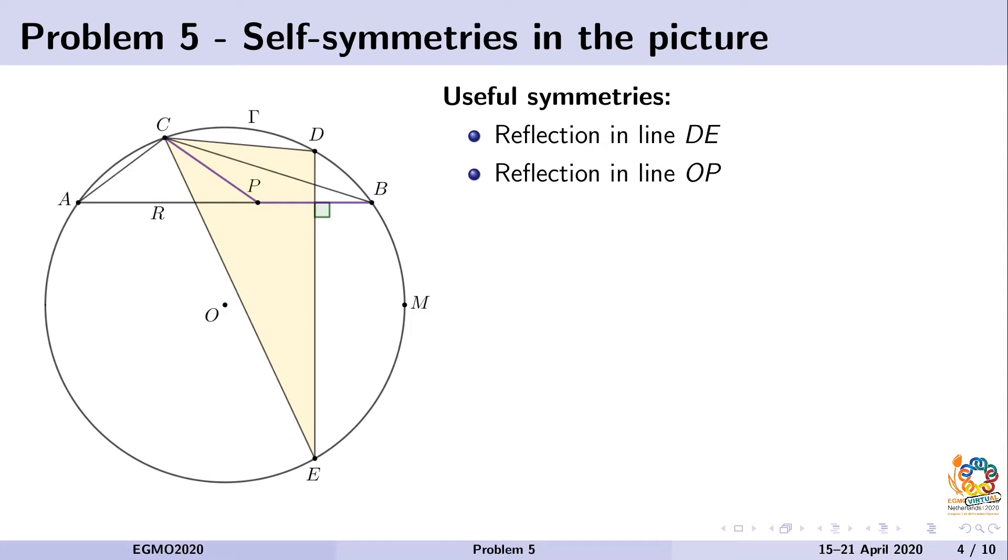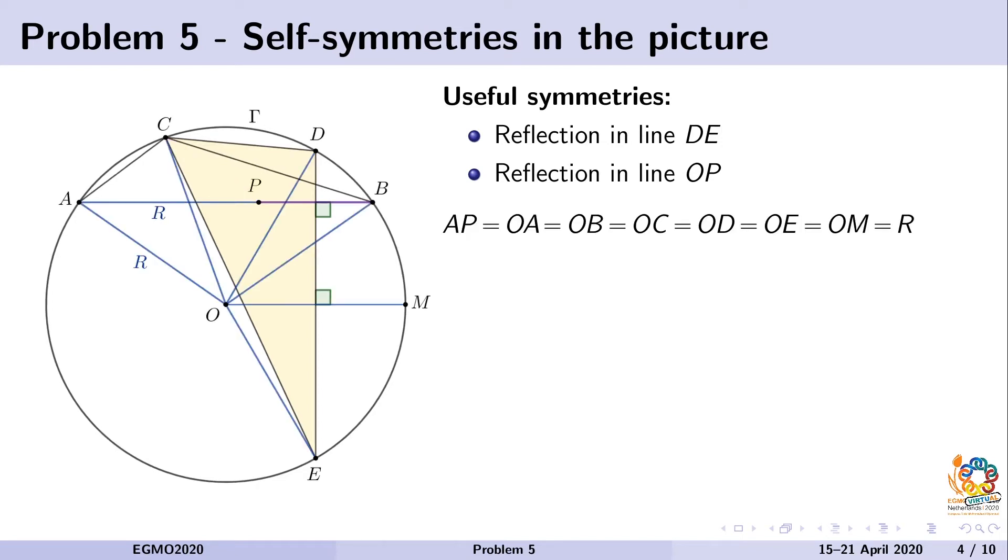To show this, we first look at the many equal segments in this picture. All of them equal R. As AP equals R and equals OM, both of them are parallel because they are perpendicular to DE by construction. We see that APMO is a parallelogram. Moreover, as AO also equals R, this will be a rhombus, which gives us one more equal segment PM, which also equals R.